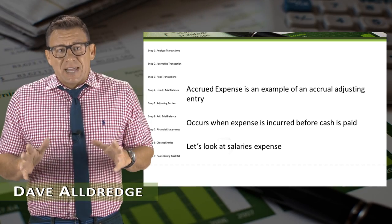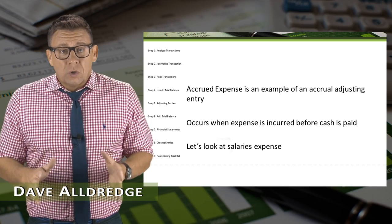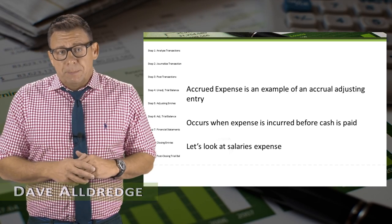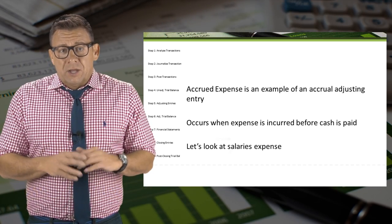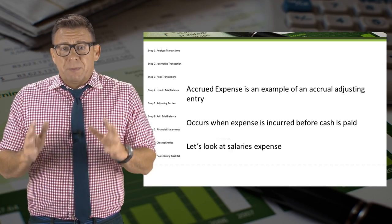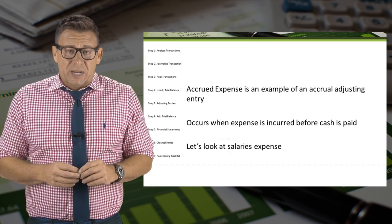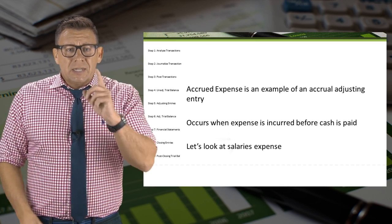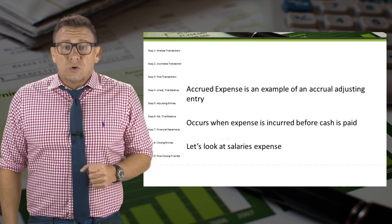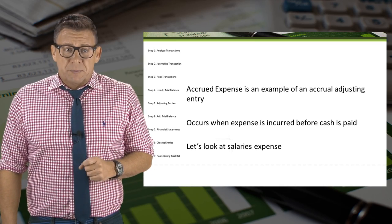Accrued expense is an example of an accrual adjusting entry. It occurs when an expense is incurred before cash is paid. Let's learn how to accrue salary expense.